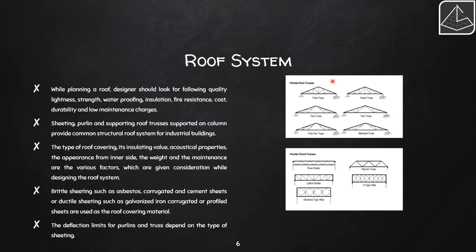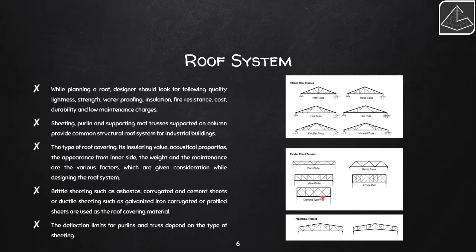Different types of roof trusses include pitched roof trusses such as Pratt truss and Howe truss, which are inclined members supported at either end with connecting structural members. There are also parallel chord trusses where the bottom and top chords are parallel, such as K-truss, Warren, and lattice girders. Finally, there is a combination of both in the trapezoidal form of truss.